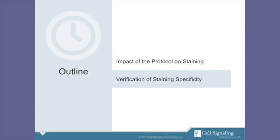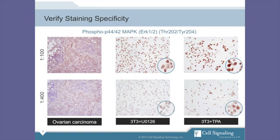Now, I will move on to the verification of staining specificity. It is fairly uncommon for an antibody not to produce any signal whatsoever, so the real challenge lies in determining if that signal is or is not specific. This can be very difficult, particularly in the case of phosphospecific antibodies, as there is no way to know which tumors do or do not express any given activated protein.